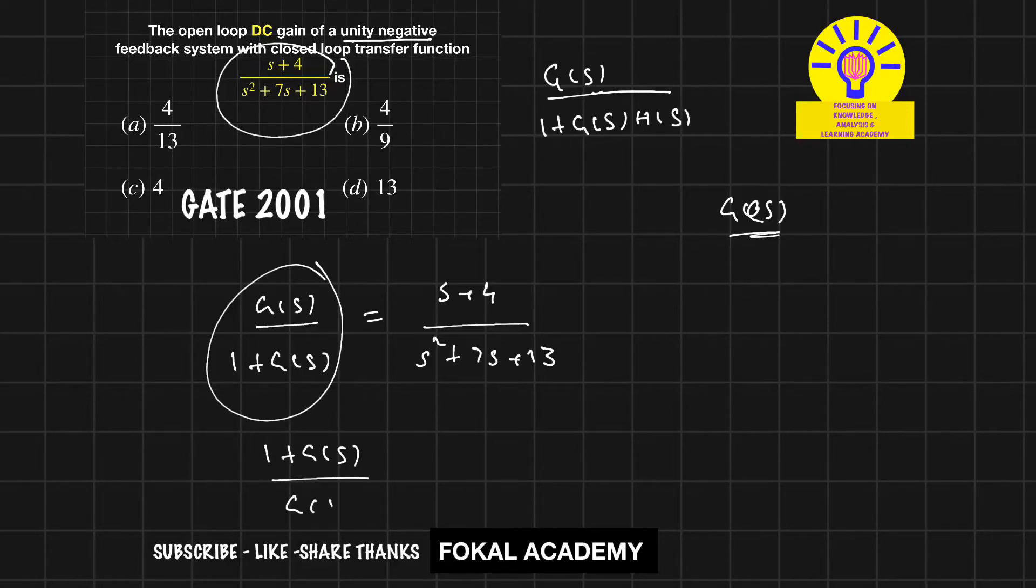Simultaneously on the other side, it becomes s squared plus 7s plus 13 divided by s plus 4. Divide it with G(s) into two parts.